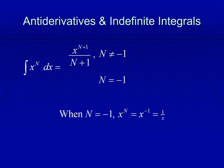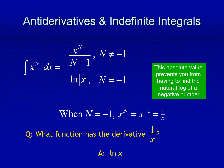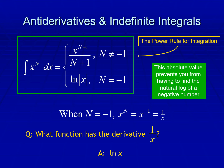Now, if n is equal to negative 1, then x to the n equals x to the negative 1, which equals 1 over x. So ask yourself: what function has the derivative of 1 over x? We have ln x. So if n is equal to negative 1, we have ln of the absolute value of x. This absolute value prevents you from having to find the natural log of a negative number. In short, this rule is the power rule for integration.